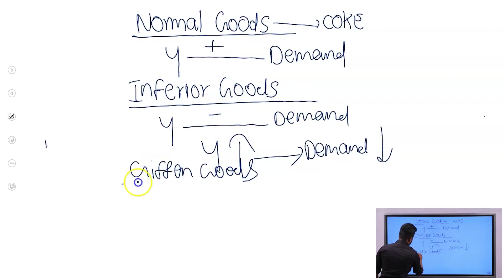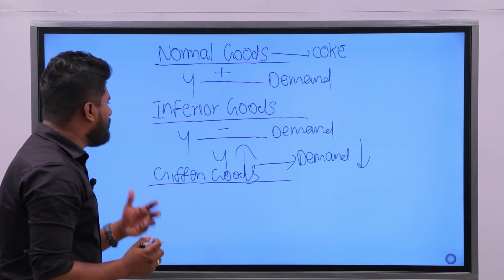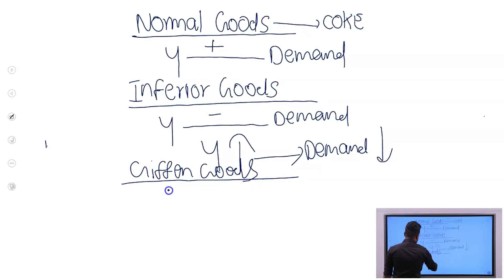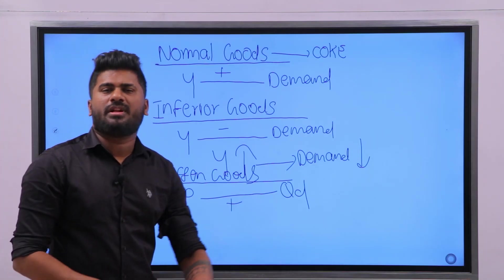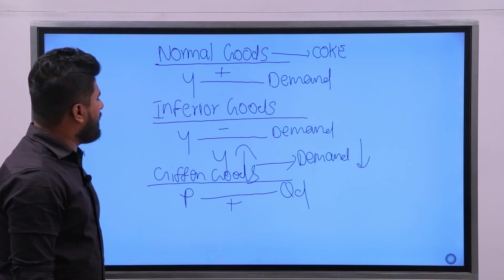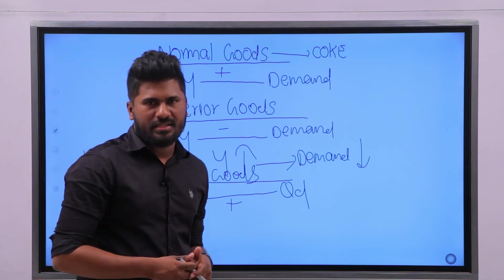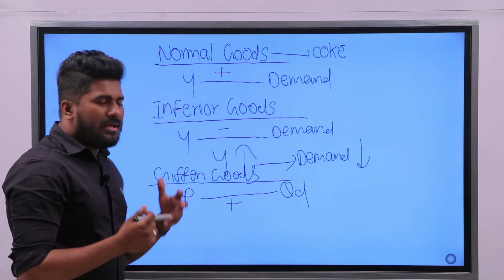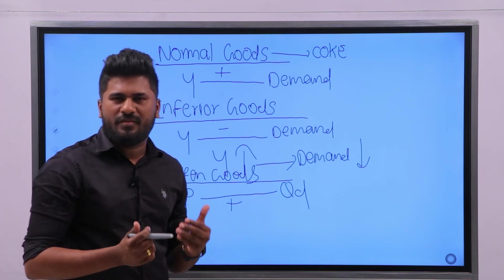The next type is Giffen goods. Giffen goods can be identified as goods used by very poor people. An example we can take is porridge.